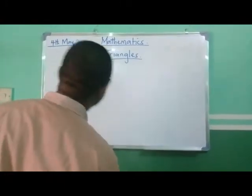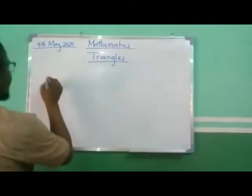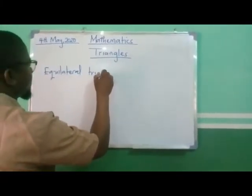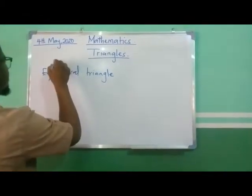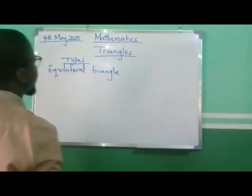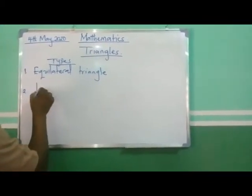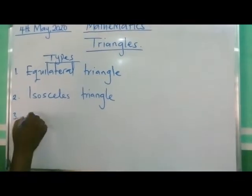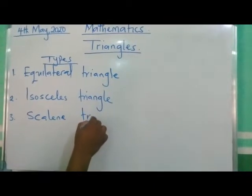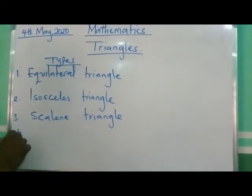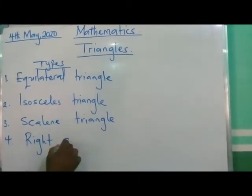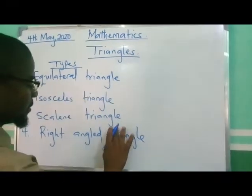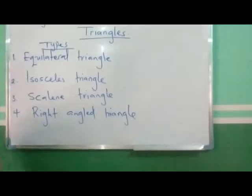We are going to see the types of triangles now. There are four main types of triangles. We have the equilateral triangle, we have the isosceles triangle, we have the scalene triangle, and the fourth one is the right angled triangle. These are the four main types of triangle.